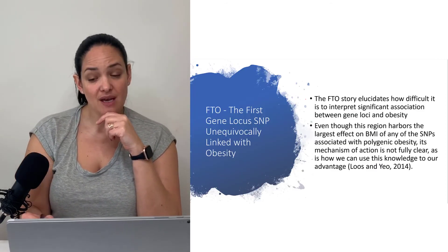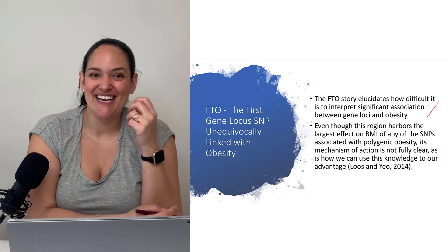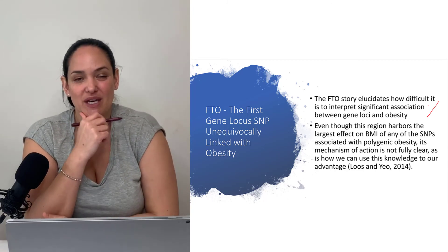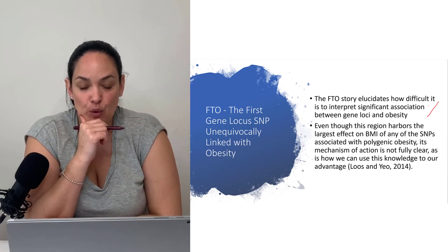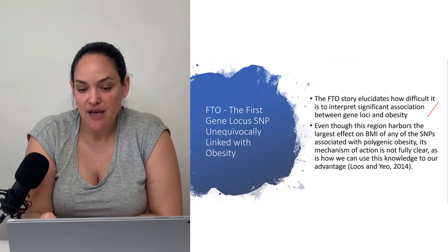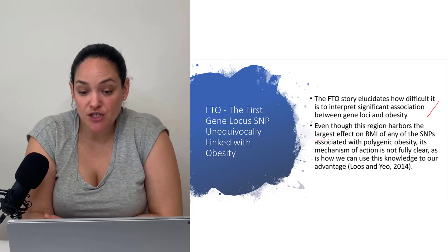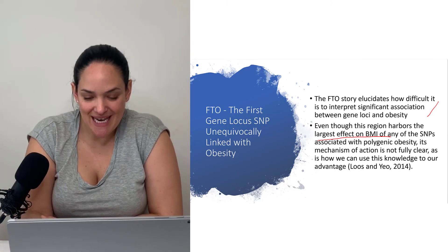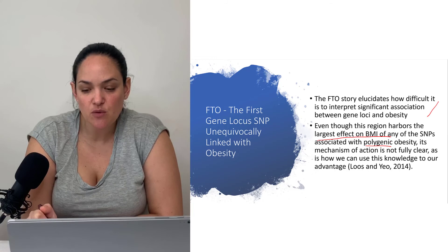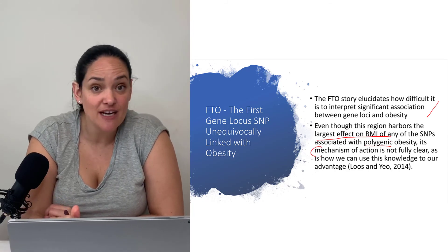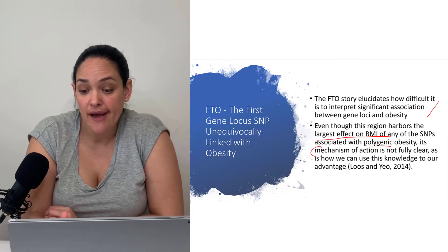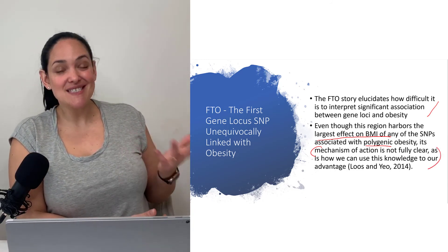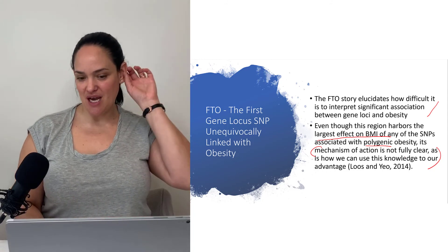The story of FTO really shines a light on how difficult it is to tease apart all this genetic information when it comes to the genetic origins of obesity. Even though this region harbors the largest effect on BMI of any of the single nucleotide polymorphisms associated with polygenic obesity, its mechanism of action is still not fully clear. We don't know what we do with this knowledge or how it helps us yet.